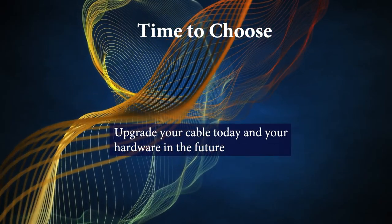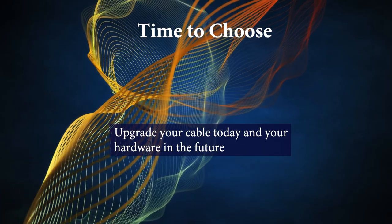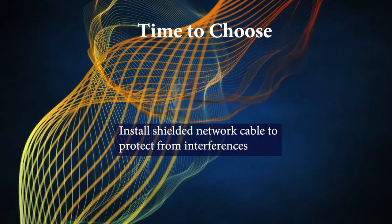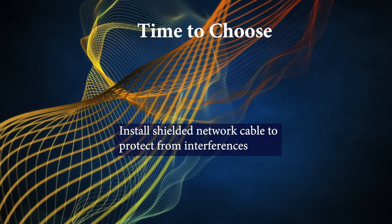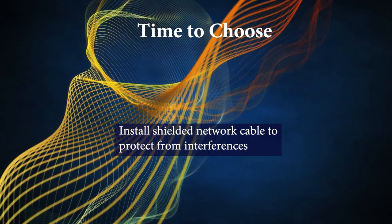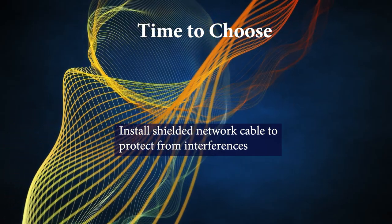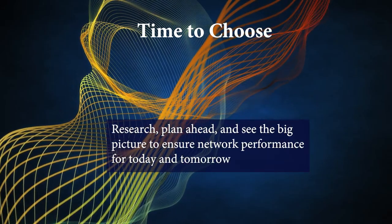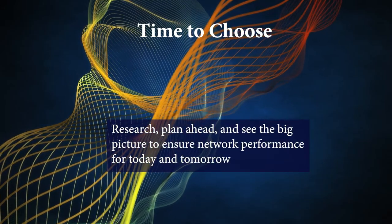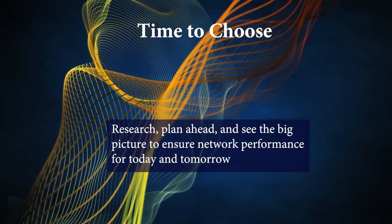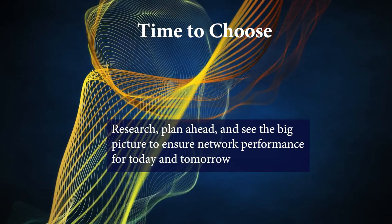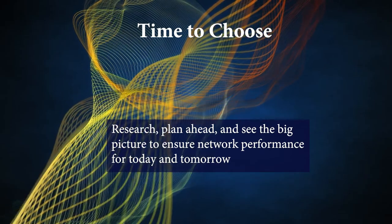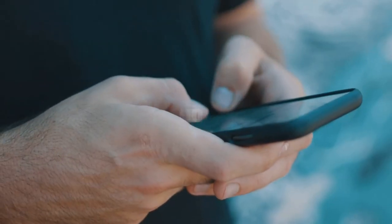You can upgrade your cable now and your connecting hardware in the future. Does your network environment have noisy electrical sources? If so, you may have to consider installing shielded network cable to protect from interference. Be sure to do your research and plan for the long run. It is important to see the big picture to ensure long-term performance of your network cabling system.